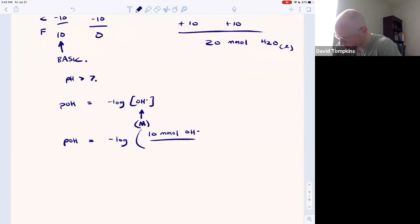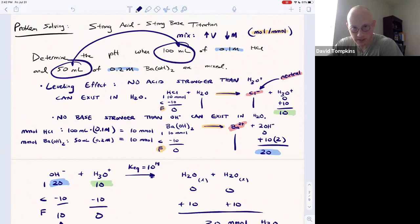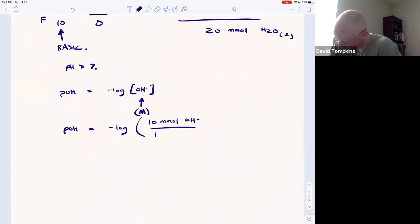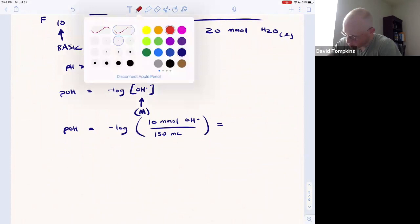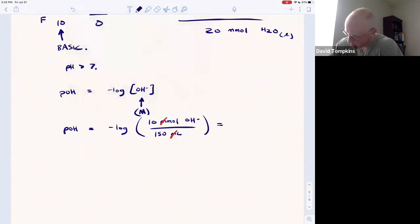And the molarity is 10 millimoles of hydroxide per the total volume - we mixed 150 together and that is now one aqueous solution that is homogeneous and inseparable, so you add the volumes when you're doing a titration. Notice that millimoles will cancel with milliliters to give moles per liter, and this is going to be negative log of 10 over 150, or negative log of 1/15th.